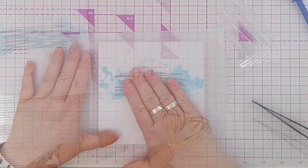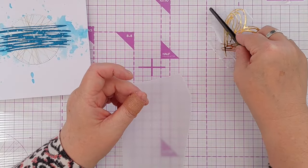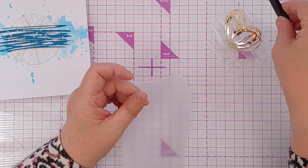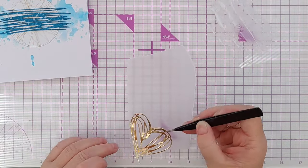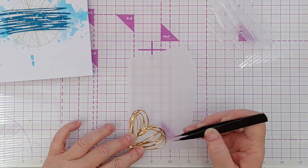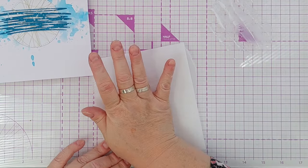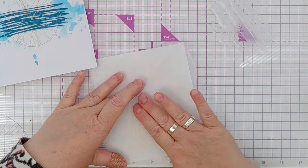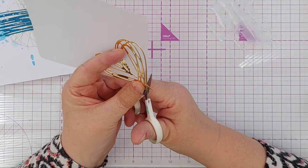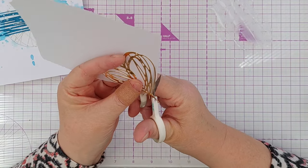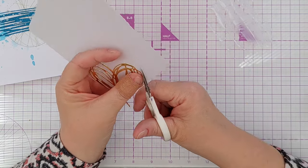I then took the gold foiled heart and dipped that in glue and stuck that on some vellum, and used my detail scissors to cut that out. I wanted to put the heart on top of the dark blue die cut, but because they're both quite detailed die cuts, I think they got a bit lost in each other. The vellum just gives the heart a little bit more solidity and helps it stand out against the background, and I do like that frosted translucent look.